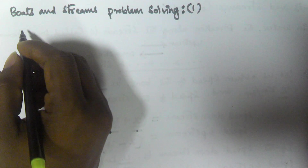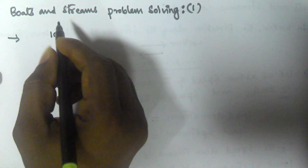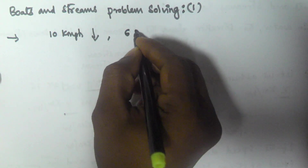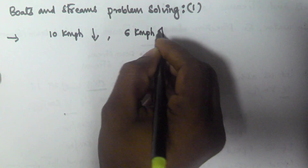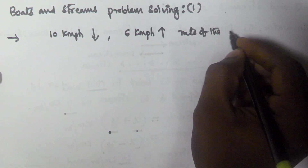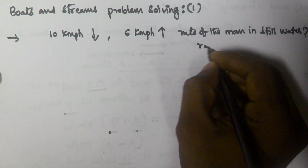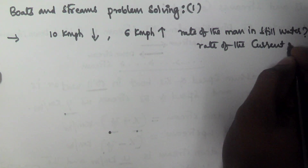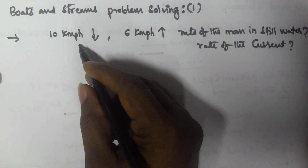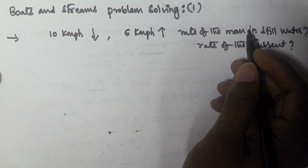Hello friends, in this video we will see some basic problems based on boats and streams. A man's downstream speed is 10 km per hour and his upstream speed is 6 km per hour. We have to find the rate of the man in still water and the rate of the current — that is, the speed of the man in still water and the speed of the current.